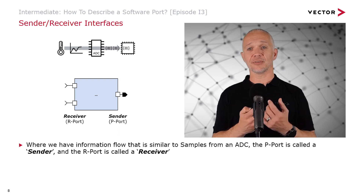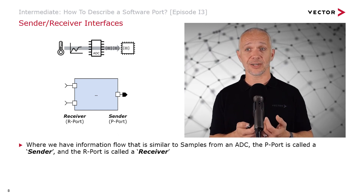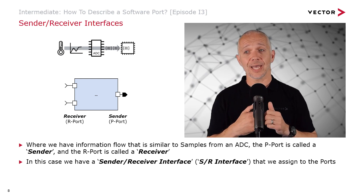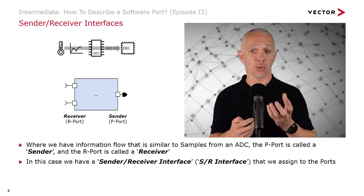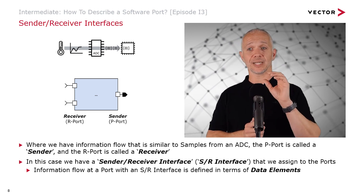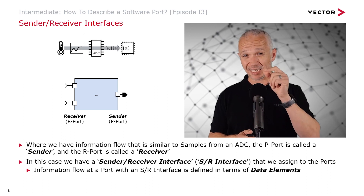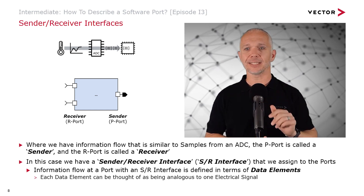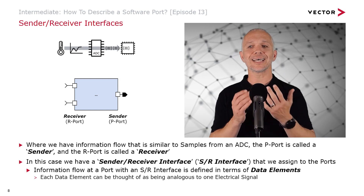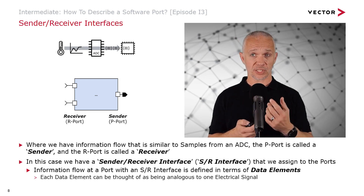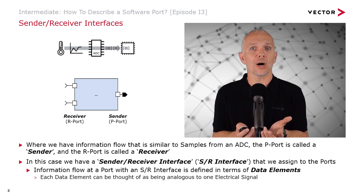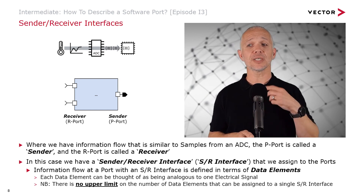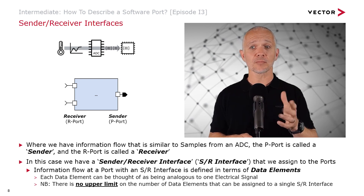A sender is sending information out and a receiver is grabbing information in, so we're replicating that arrowhead in how we denote the ports. This gives us a direction for the flow of information to align with the direction the arrows are pointing. What we've defined is a sender receiver interface — or SR interface for short — assigned to these ports. The information flow at a port with an SR interface is defined in terms of data elements, which typically correspond to a number. Each data element is analogous to an electrical signal — essentially a virtual wire sent between software.